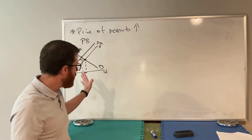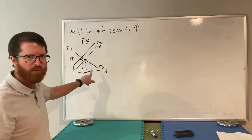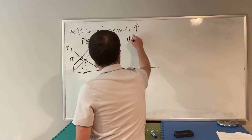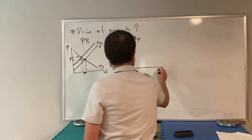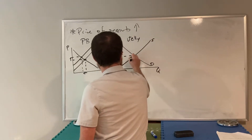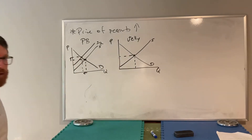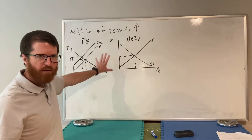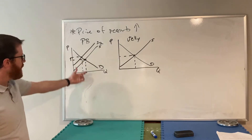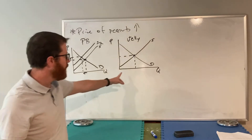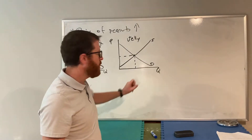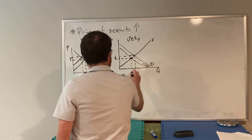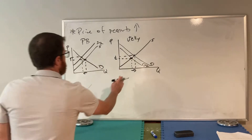Let's take that to a second level of effect: the market for jelly. Consumers now see that peanut butter is more expensive. Since consumers tend to buy these two things together - they're complements - when the price of peanut butter goes up and people buy less peanut butter, they also won't buy as much jelly. So demand for jelly goes down, resulting in lower prices and lower quantity.